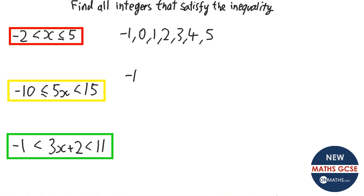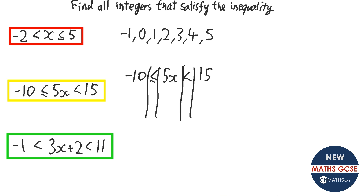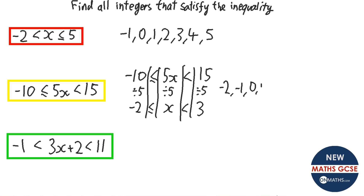The next question has to be solved first to get x on its own. There are three parts to this compound inequality. Dividing everything by 5: −10 ÷ 5 = −2, 5x ÷ 5 = x, and 15 ÷ 5 = 3. So −2 ≤ x < 3. The integers are −2, −1, 0, 1, 2 — it can be equal to −2, but not equal to 3.